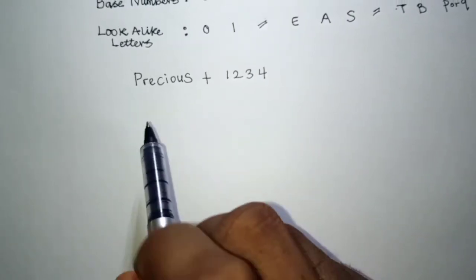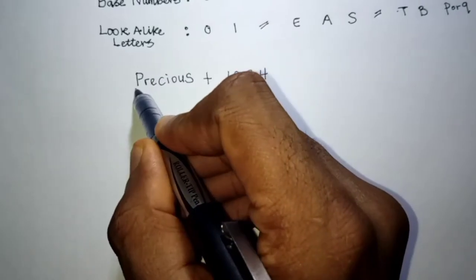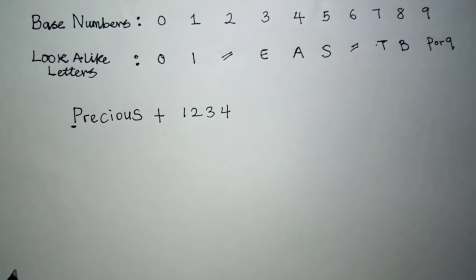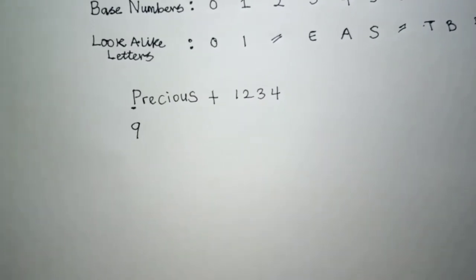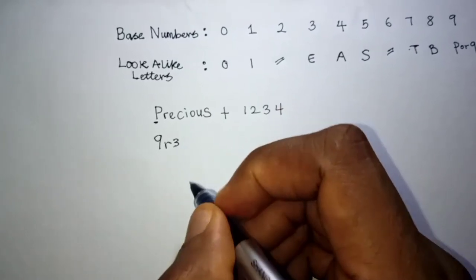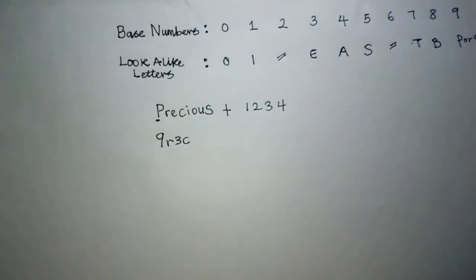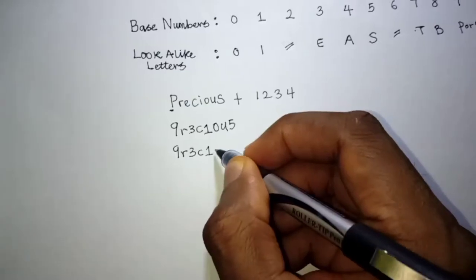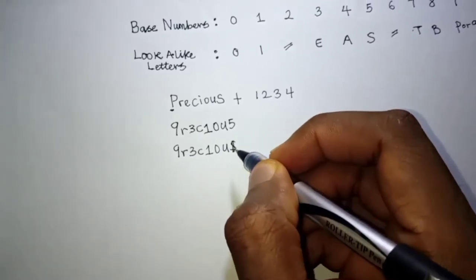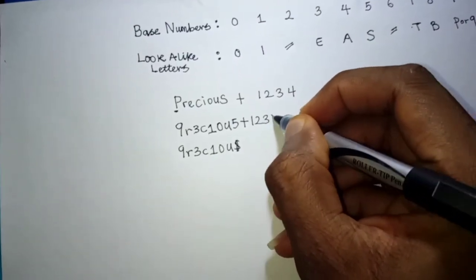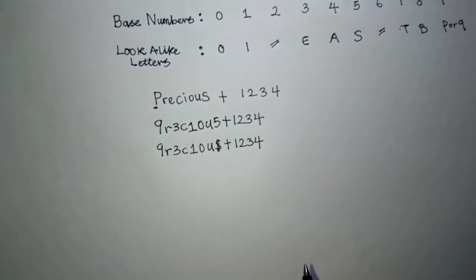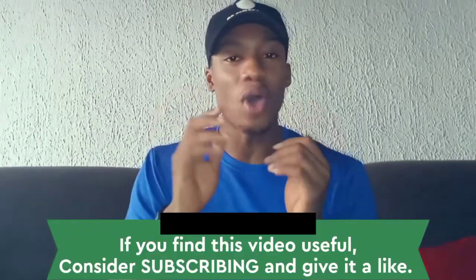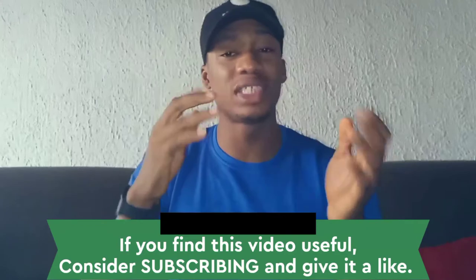Now apply the substitutions: P looks like 9, so replace P with 9. R has no number equivalent so leave it. E looks like 3, so use 3. C has no equivalent, leave it. I looks like 1, use 1. O looks like 0, use 0. U — leave it. S looks like 5, or you can use the dollar symbol. So your password becomes something like 9r3c10us+1234 instead of the generic 'Precious+1234.' This makes it extremely difficult for any cracking tool to get.